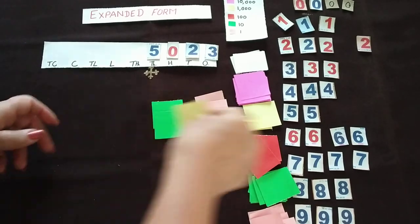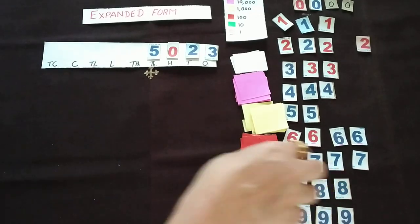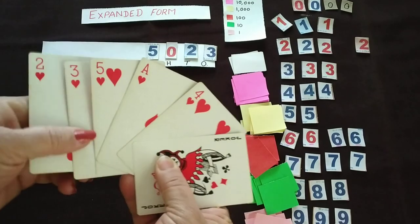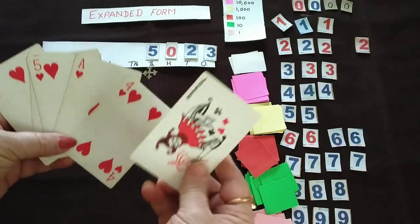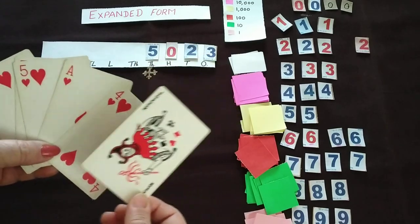Now the same activity we can do with the help of playing cards also. So here I have taken these number cards. In number cards 0 is not there, so this joker represents 0.